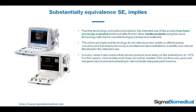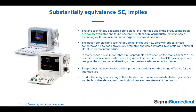In many cases, it also means that similar products have been on the market prior to 1976. For this reason, clinical data most likely will not be needed, and the FDA will rely upon well-designed bench and animal testing to demonstrate adequate performance. The product has been tested and by performance data found safe and effective for their intended use. Product labeling is according to the intended use, claims are substantiated by scientific and technical evidence, and user instructions ensure safe use of the product.